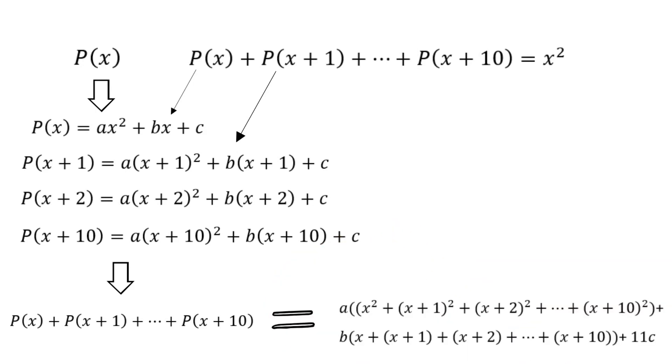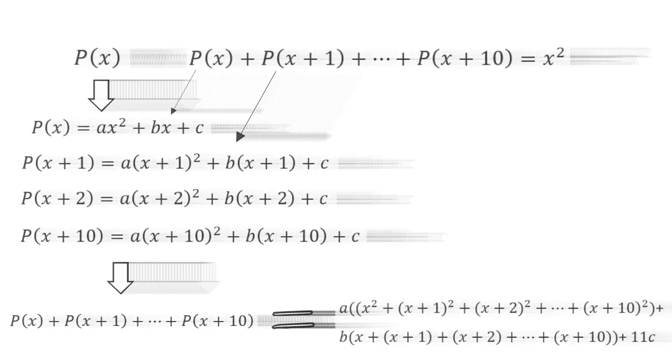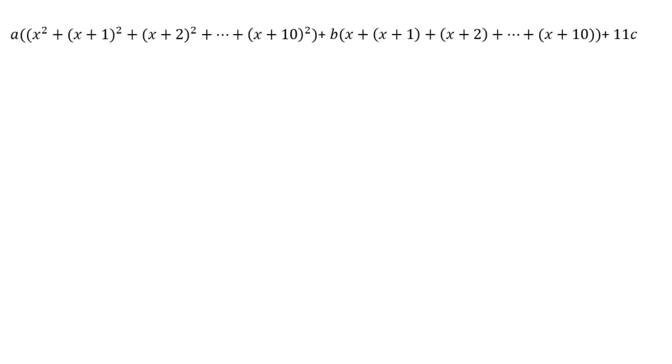Note that we put all terms containing coefficients A and B together. You can stop the video here and check the corresponding transitions. At this stage, let's analyze a bit more in detail each bracket and group together the different powers of X.